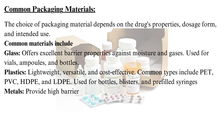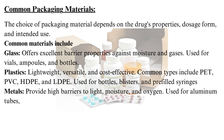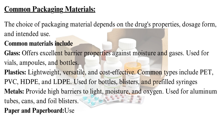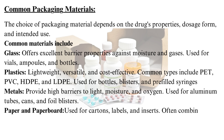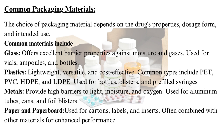Metals provide high barriers to light, moisture, and oxygen, and are used for aluminum tubes, cans, and foil blisters. Paper and paperboard are used for cartons, labels, and inserts, and are often combined with other materials for enhanced performance.